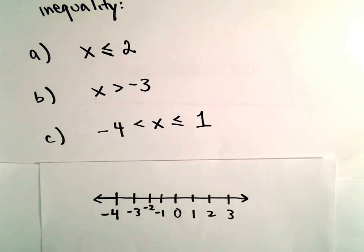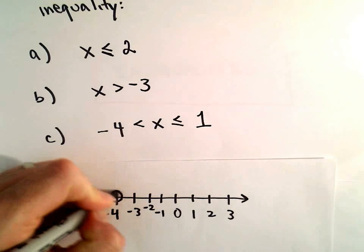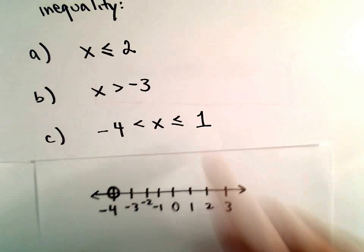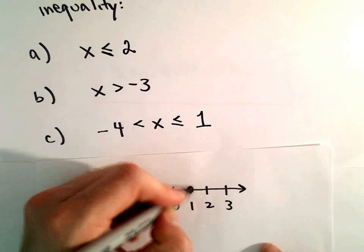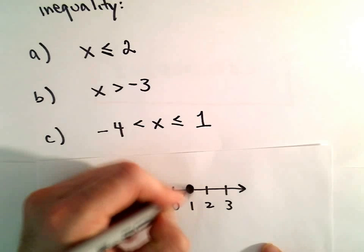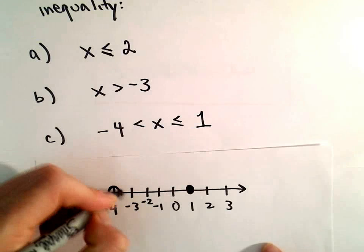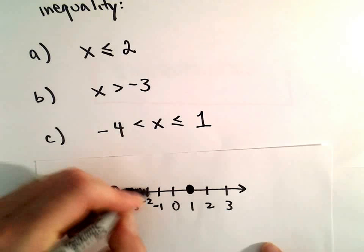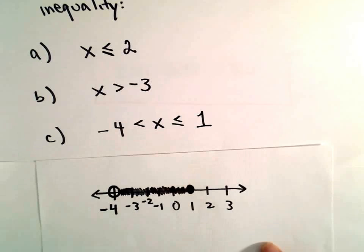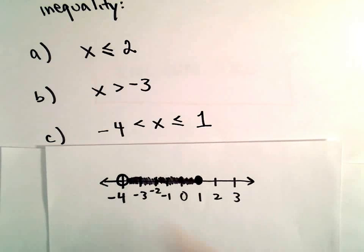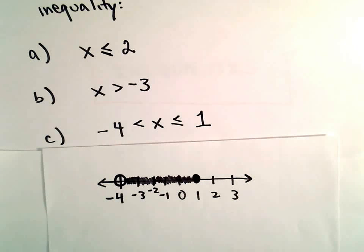Same idea. It has to be strictly greater than negative 4, so I'm going to put an open circle there. Less than or equal to positive 1, so since it can be equal to that, we'll use a solid dot. Then we shade everything that's strictly greater than negative 4 and less than or equal to positive 1. That would be our number line that corresponds to our inequality in Part C.